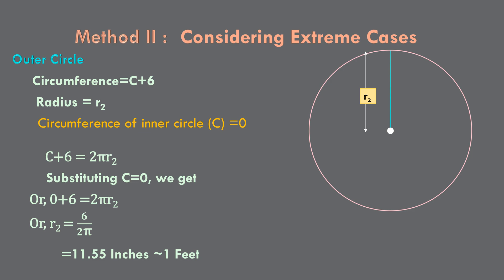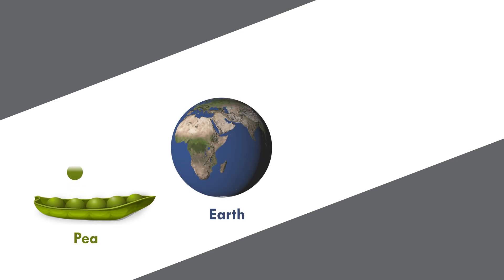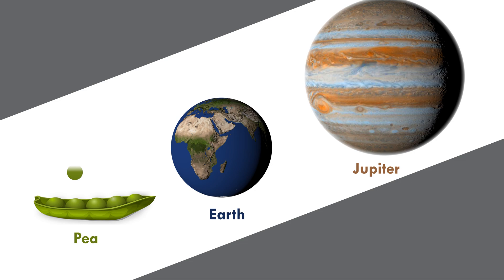Now, suppose something far bigger than earth like Jupiter. If you do the same thing even around Jupiter, the increase in radius with 6 feet increase in circumference is going to be 11.5 inches. Be it a pea, earth or Jupiter, an increase of 6 feet in circumference is going to yield an increase of 11.5 inches in the radius.